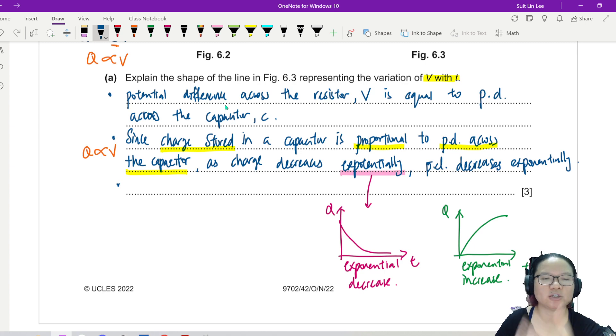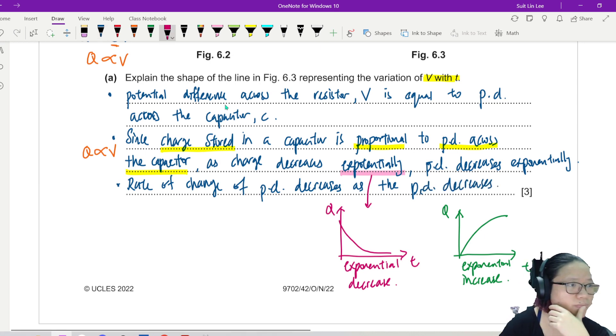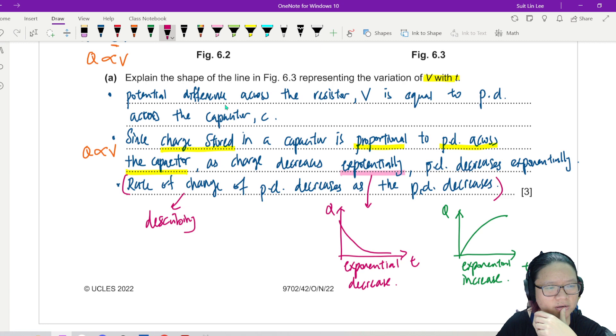In other words, I'm saying that it should have the same shape. So then finally, the rate of change of the potential difference decreases as the potential difference decreases. This is describing what it means to decrease exponentially, or it describes exponential decrease.